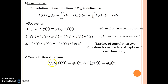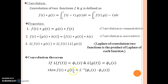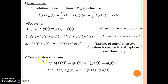This property is very important and is in fact an equivalent version of the convolution theorem. Let us see what the convolution theorem states. If the Laplace of f of t is phi 1 of s and the Laplace of g of t is phi 2 of s, then f of t star g of t — the convolution of two functions — is nothing but the inverse Laplace of the product of individual Laplace transforms, that is phi 1 of s times phi 2 of s. The third property statement is equivalent to this convolution theorem.